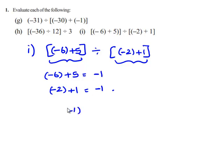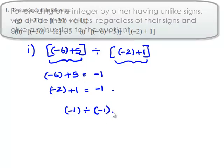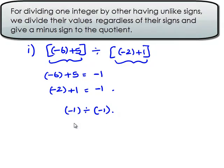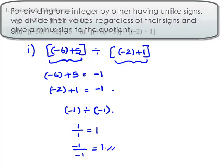Therefore, the question becomes negative 1 divided by negative 1. When we divide two integers, first we divide their values regardless of their signs. That is 1 divided by 1 gives 1. When we divide two integers having similar signs, we always obtain a positive sign in the answer, which implies negative 1 divided by negative 1 gives 1. Therefore, the answer is 1.